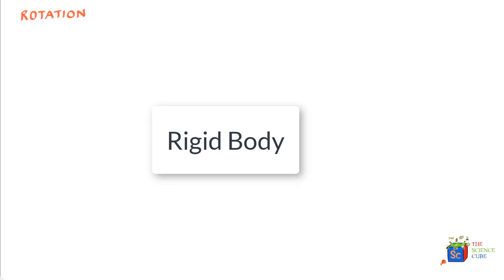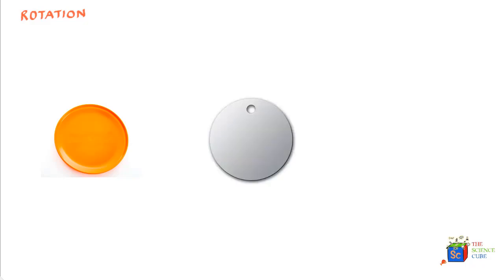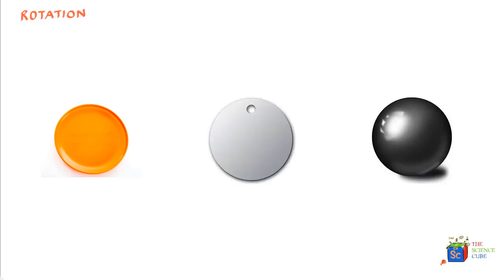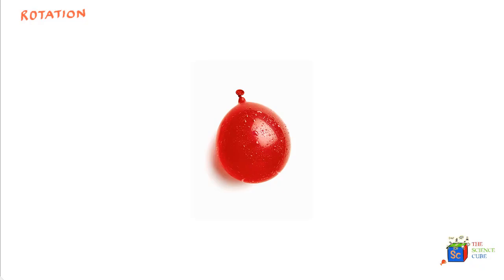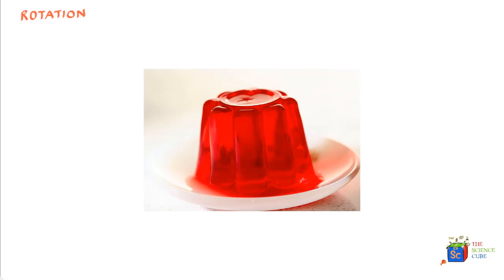An example of a rigid body could be a hard plastic piece, an iron plate, a metal sphere, or even the computer you're using — unless you rotate your computer so hard that the parts inside get detached, in which case the shape would have changed. What is definitely not a rigid body is a balloon filled with water or a piece of jelly, which will change shape very quickly the moment they are rotated or given any kind of motion.